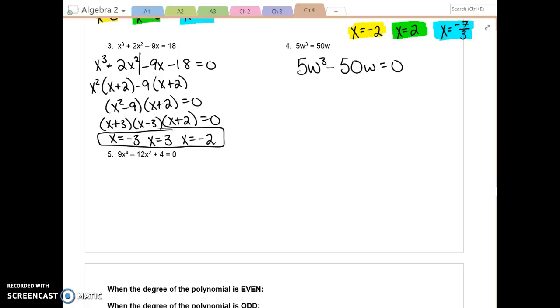In example 4, after you put it equal to 0, the next step is, are there anything in common in these two terms? 5 and w. That will leave us with w squared minus 10. Am I done factoring? Your first inclination is to say no because you see w squared minus, and w squared minus usually means difference of two squares. But is 10 a perfect square? No. So we can't do difference of two squares. So we actually are done.